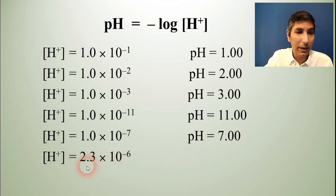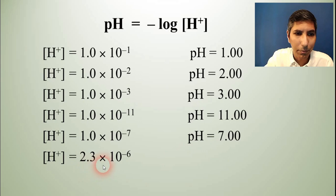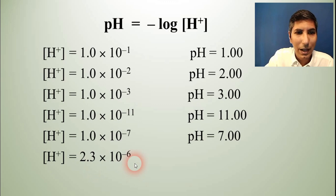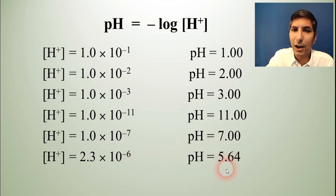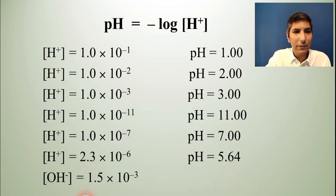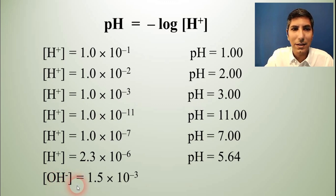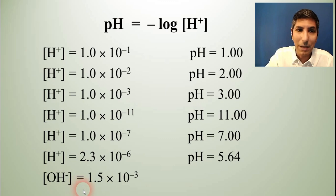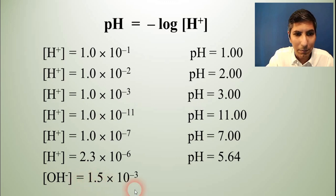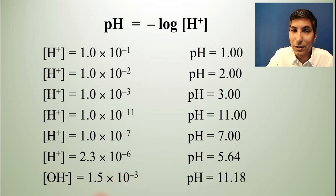For a value like 2.3×10⁻⁶, you need to plug it into your calculator and take the negative log, giving you a pH of about 5.64. If you're given the hydroxide concentration instead, take 1×10⁻¹⁴ divided by that number to get the H+ concentration, then take the negative log. Doing that gives you a pH of about 11.18.